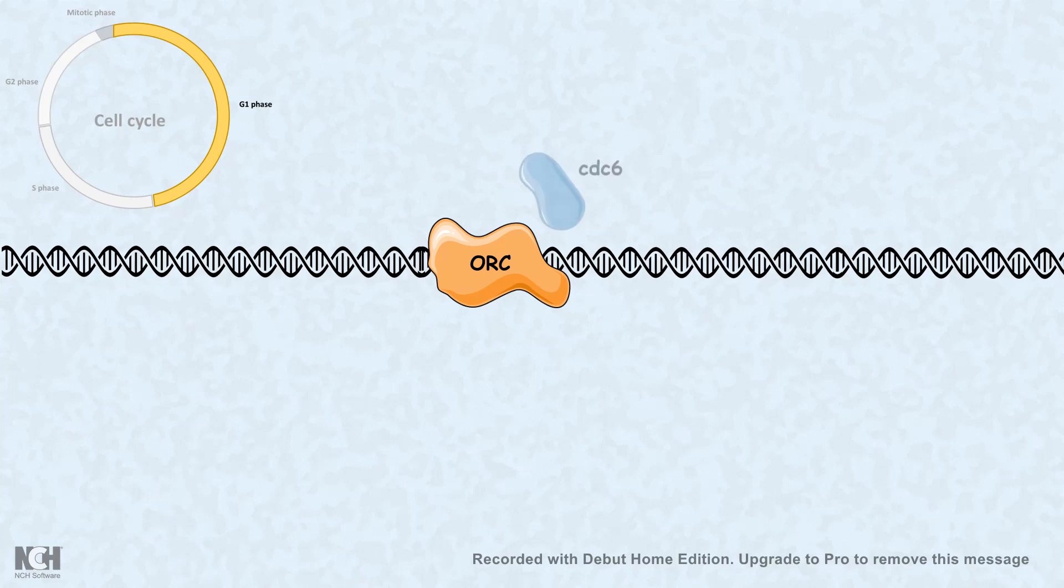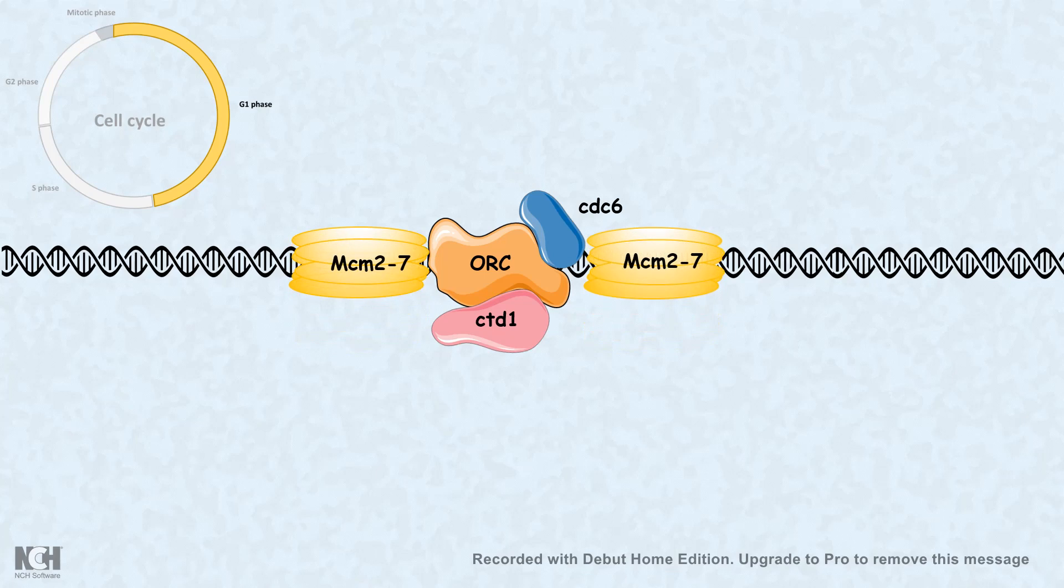At this point, two molecules CDC6 and CTD1 bind to the ORC complex. These two molecules work like a helicase loader and they have a defined function. Their level is regulated in such a fashion that it regulates initiation of the replication and ensures that replication can take place once, not twice in a cell cycle. As they are helicase loaders, they can load the MCM helicase onto its position.